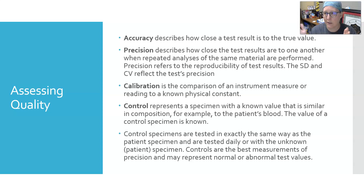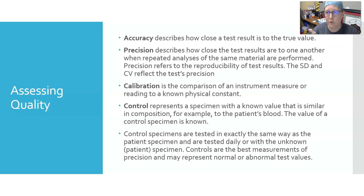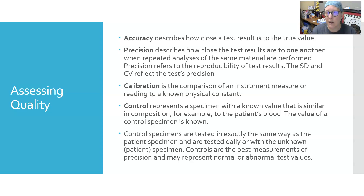Calibrators usually come in multiple levels covering the analytical measurement range from low to high concentrations. A control represents a specimen with a known value similar in composition to a patient sample. Control specimens are used to check the machine daily at a minimum, running multiple levels — low, normal, and high — to verify analyzer performance across the analytical measurement range.